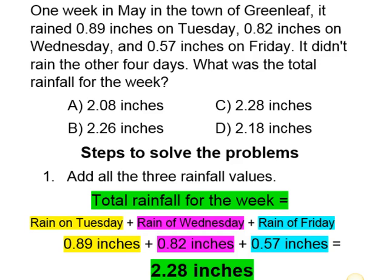For step one, adding all three rainfall values: 0.89 inches on Tuesday, plus 0.82 inches on Wednesday, plus 0.57 inches on Friday. When we add all those together, our answer is 2.28 inches. Now, for this word problem we didn't figure out which answers to cross out first because this one was a little tricky — we had to add all the values first to find the correct answer. Sometimes you will be able to cross out wrong answers, and sometimes you aren't, so pay attention to those times when you can to increase your chances.